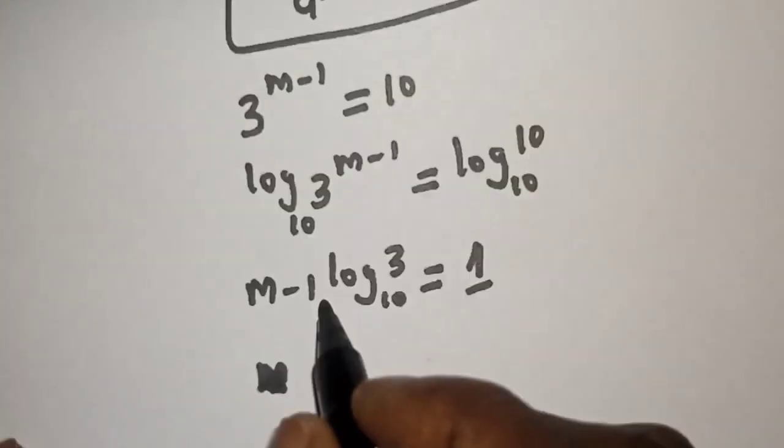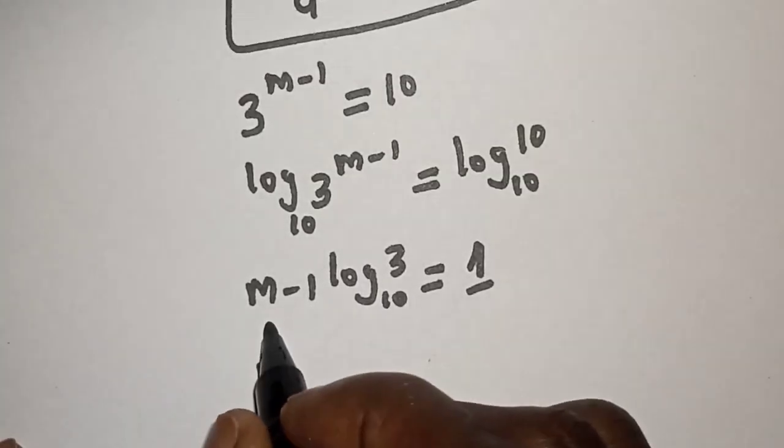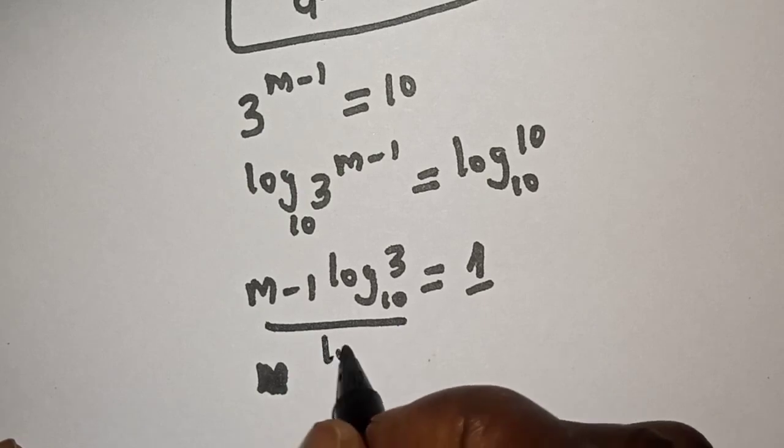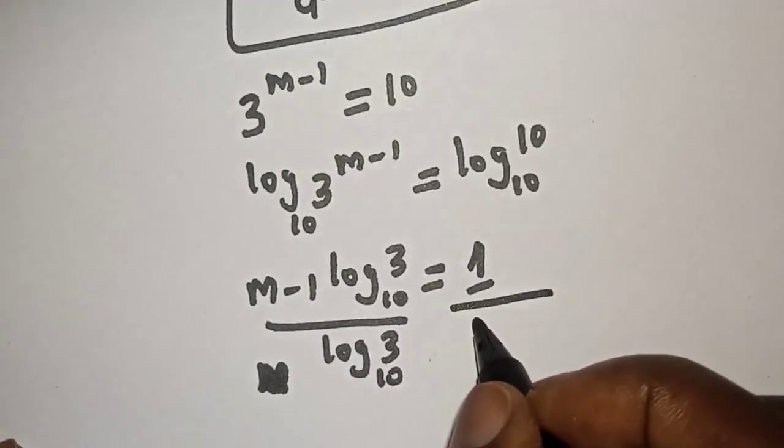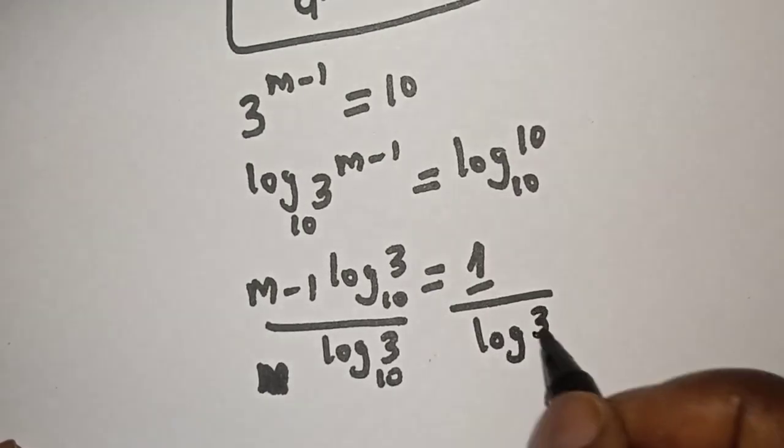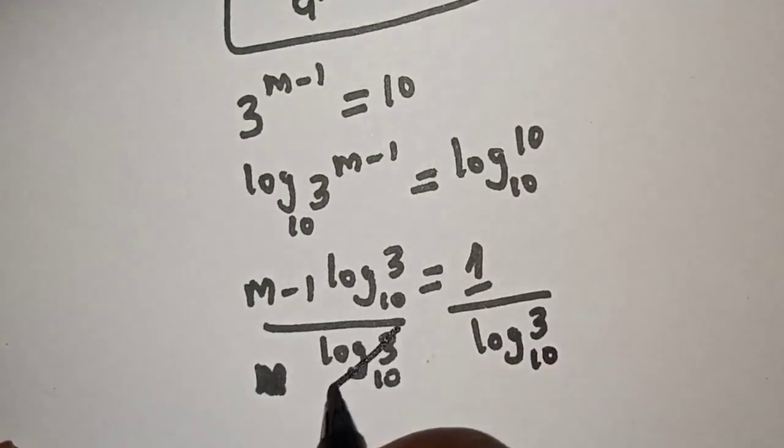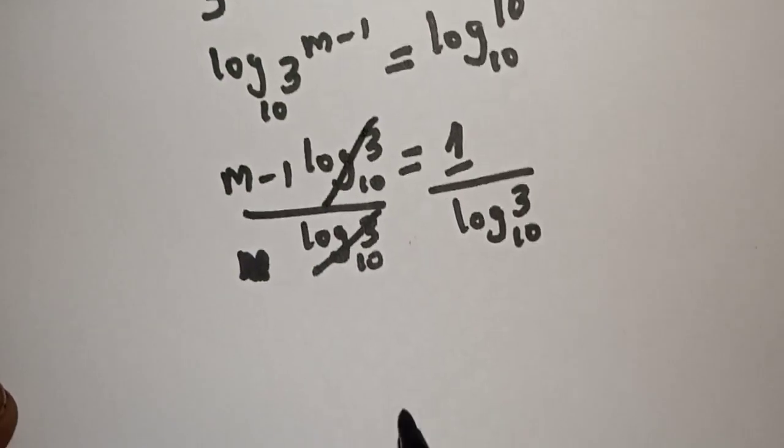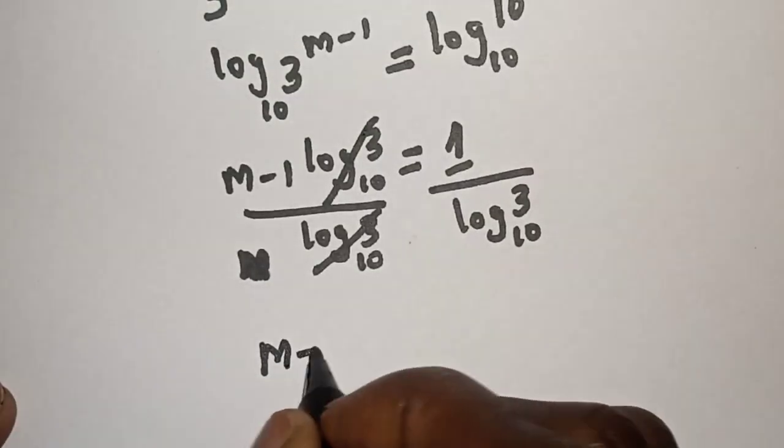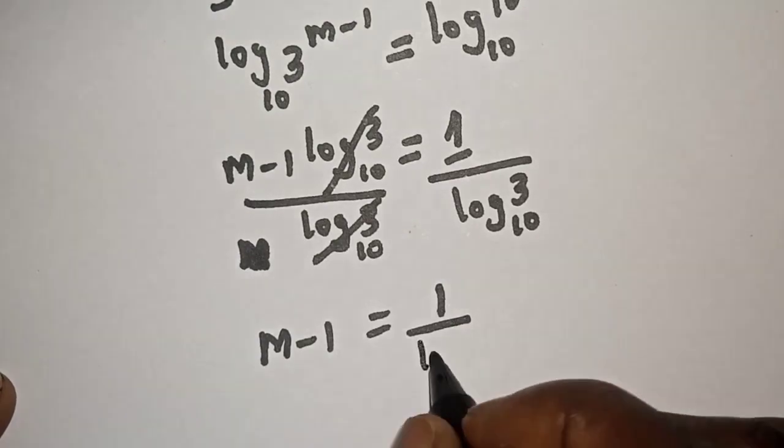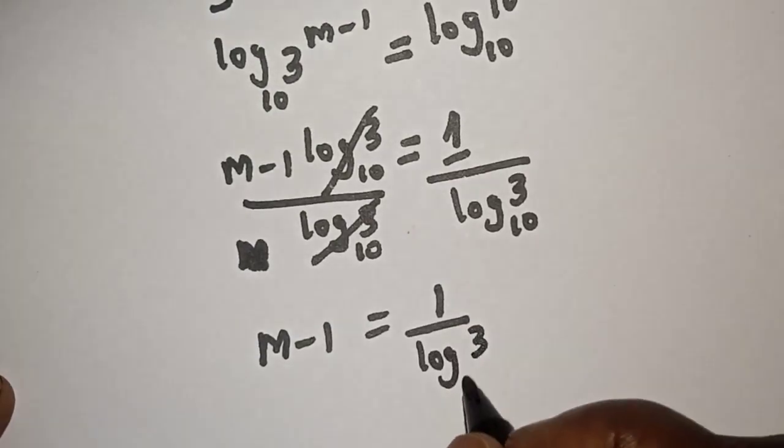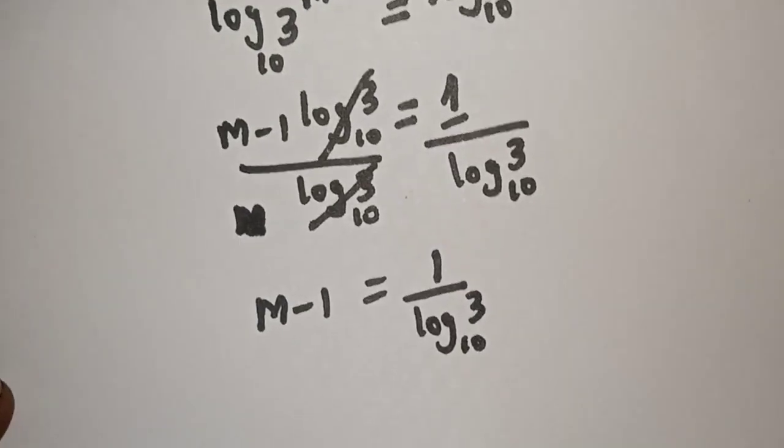And let's divide both sides by log 3 base 10, divided by log 3 base 10. Then this one will cancel this. We have m minus 1 is equal to 1 over log 3 base 10.